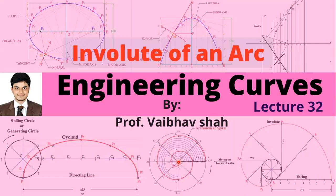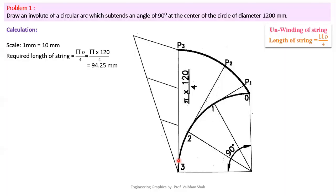Let us start with one of the problems of involute of an arc. Problem 1: Draw an involute of a circular arc with a subtended angle of 90 degrees at the center of a circle of diameter 1200 mm.